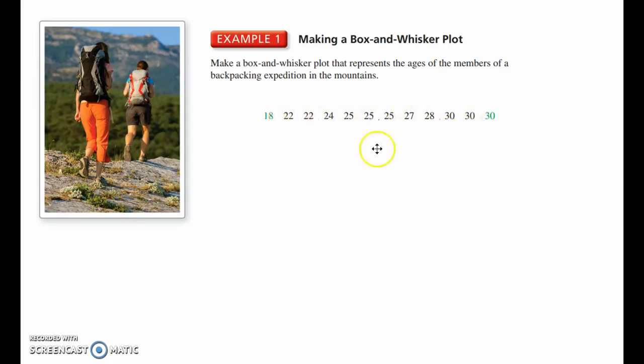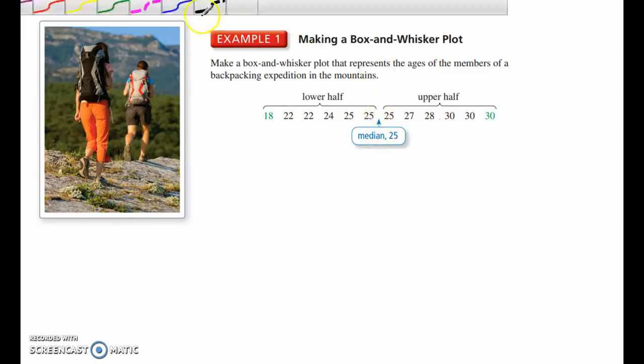This is an even set of numbers, so the median is going to fall in between two numbers, which splits it exactly in two halves, the lower half and the upper half. If it is an odd set of numbers, if there was a number in the middle here, that would be the median, and it would be neither part of the lower or upper half. These are the least values, 18 and 30, and then we look at each half to find the quartiles. The quartiles are the median of each half, so this is made up of six numbers right here. The lower quartile would fall in between 22 and 24, the upper quartile in between 28 and 30.